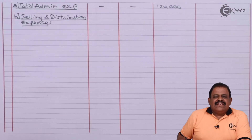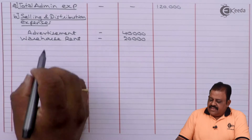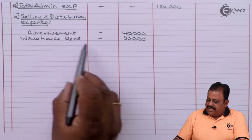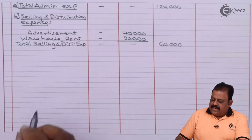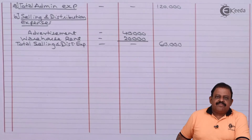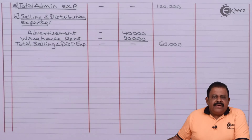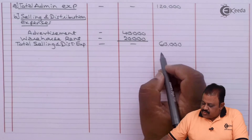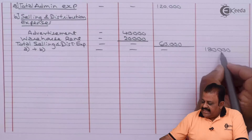Next we have selling and distribution expenses. Under selling and distribution: advertisement 40,000 and warehouse rent 20,000. Total selling and distribution expenses: 60,000. Adding operating expenses: 1 lakh 20,000 plus 60,000 gives total operating expenses of 1 lakh 80,000.